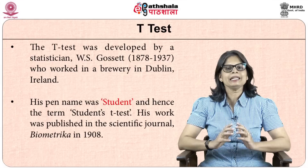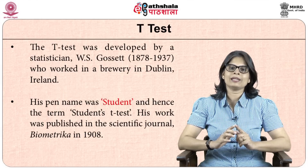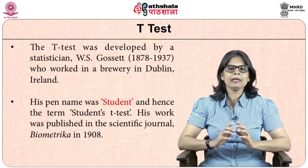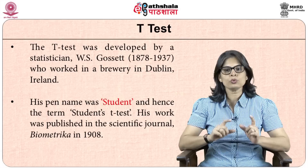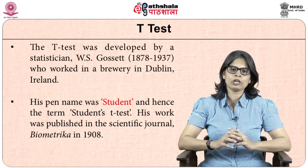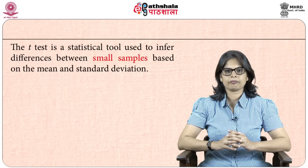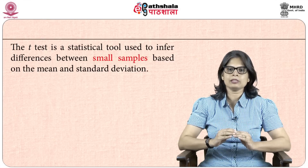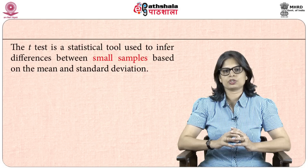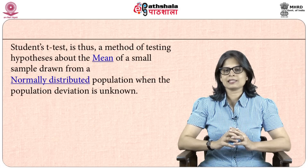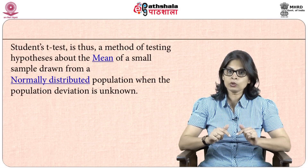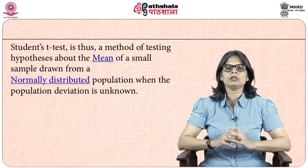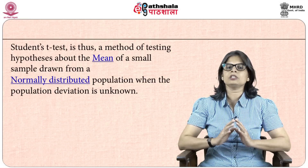The t-test was developed by statistician W.S. Gossett, who worked in a brewery in Dublin, Ireland. His pen name was Student, and hence the term Student's t-test, which was published in the scientific journal Biometrica in 1908. The t-test is a statistical tool used to infer differences between small samples based on the mean and the standard deviation. Student's t-test is a method of testing the hypothesis about the mean of a small sample drawn from a normally distributed population when the population standard deviation is not known.